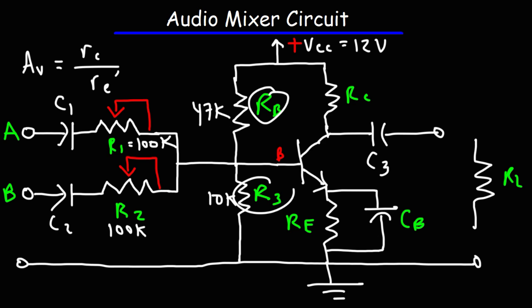RB and R3 form a voltage divider circuit. We can calculate the voltage at point B when the transistor is not connected to that point. It's going to be 12 times 10K, that's R3, divided by the sum of R3 and RB, which is 10K plus 47K.